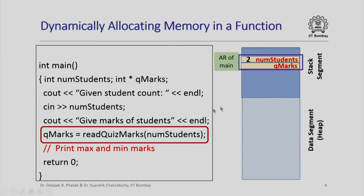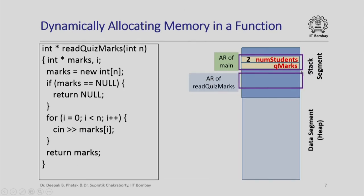Let us see how the memory layout might look as we execute this program. Here I have the stack segment and the data segment in main memory. When the main function is called by the operating system, the activation record of the main function will be in the call stack in the stack segment. Each local variable of main will be present in this activation record. Let us say we have read in the value of `num_students` as 2, and `q_marks` is still uninitialized. Then I invoke `read_quiz_marks` with parameter `num_students` equal to 2, and an activation record for `read_quiz_marks` is pushed onto the call stack.